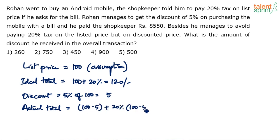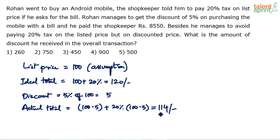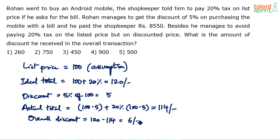He paid 100 minus 5 rupees, plus 20% of (100 minus 5 rupees). He paid tax only on the discounted price — 20% on 95 rupees, not on 100 rupees. So, 95 plus 20% of 95: 20% of 95 is 19. So, 95 plus 19 comes out to be ₹114. He was supposed to pay ₹120; he paid ₹114. So, he saved ₹6. Overall discount comes out to be 120 minus 114, which equals ₹6.